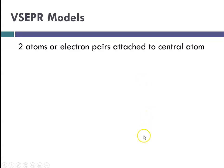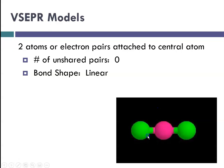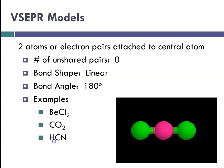For VSEPR models with two atoms or electron pairs attached to a central atom and zero unshared pairs, the bond shape will be linear — two things attached to a central atom. The bond angle that results is 180 degrees. Examples would be beryllium chloride, carbon dioxide, and hydrogen cyanide.